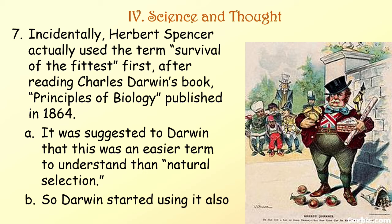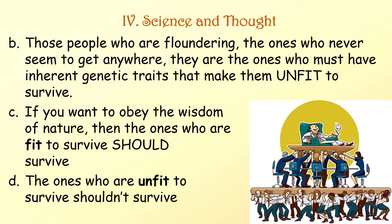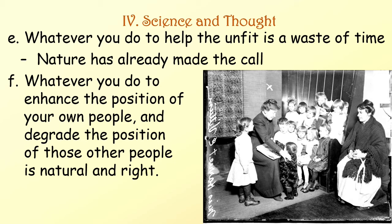For Spencer, Darwin's struggle for survival was an economic and racial struggle. Those people who appear to be thriving in the struggle for economic survival must have inherent genetic traits that made them more fit to win in the harsh economic environment. Those who seem to be floundering, who never seem to get anywhere, must have inherent genetic traits that make them unfit to survive. And if you want to obey the wisdom of nature, then the fit should survive and the unfit shouldn't. So whatever you do to help the unfit is a waste of time — nature has already made the call. Whatever you do to enhance your own people and degrade those others is natural and right.